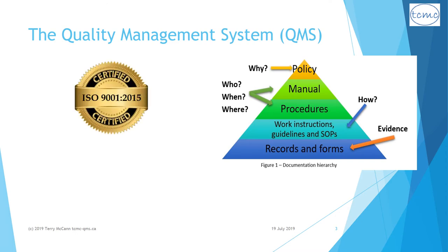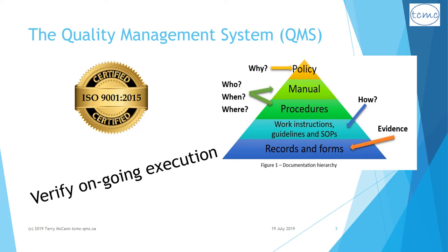If your organization is indeed ISO 9001 certified, then an accredited auditor has certified that your QMS is ISO 9001 2015 conformant. You do not have to do that all over again. What you have to do now is verify from evidence that the people in your organization are executing on the procedures and processes that are laid out in your quality management system — your QMS.